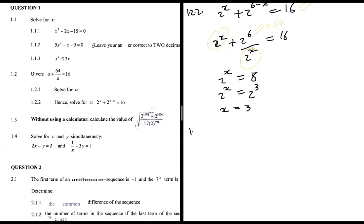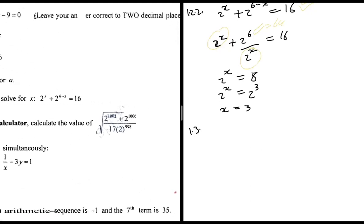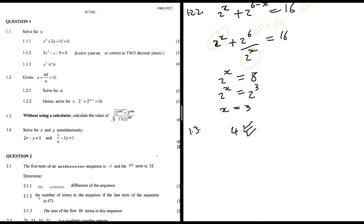For 1.3, calculate the value of this expression without a calculator. One tip: I first use a calculator to check what the answer should be — I get 4. Knowing the target helps me navigate the algebraic steps. The expression is (2^1002 + 2^1006) / (17 × 2^998).